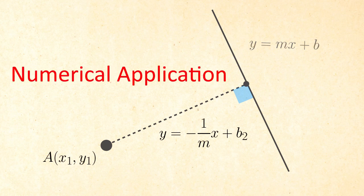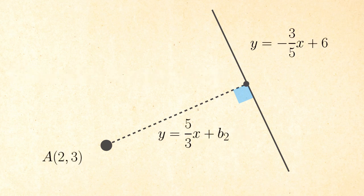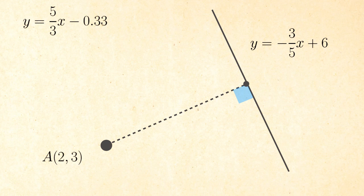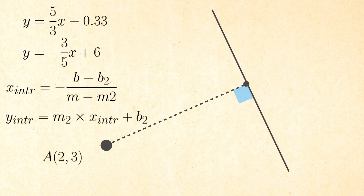B can be calculated if we substitute the point A coordinates in this equation and we end up by this result. Since we have already the equations of the two lines, we can use this formula to find the x and y coordinates of the orthogonal projection.